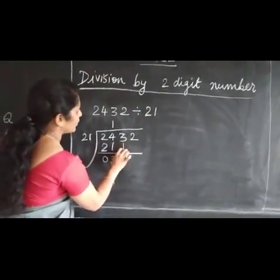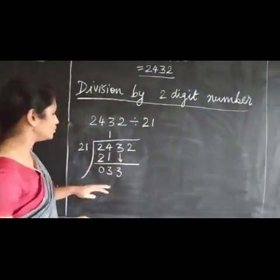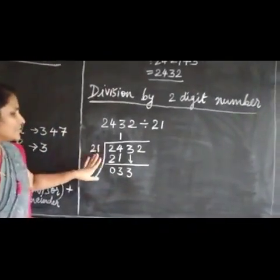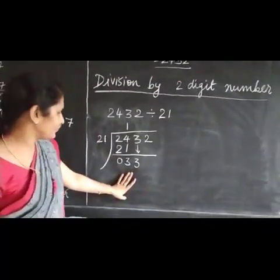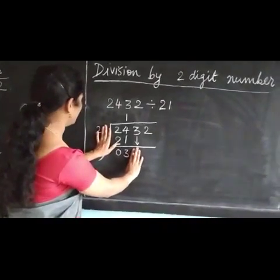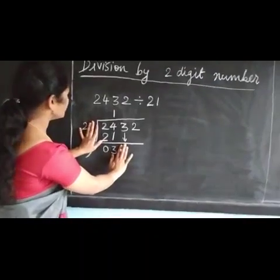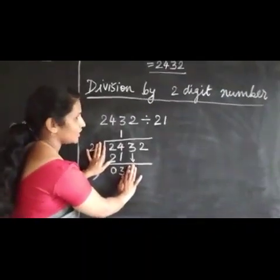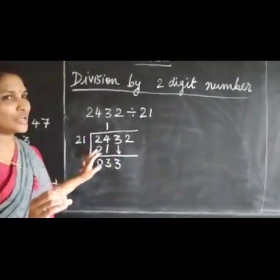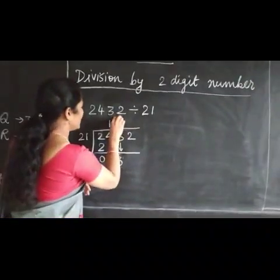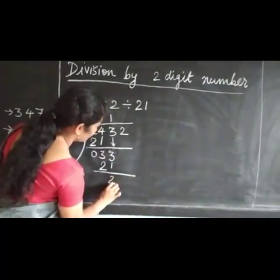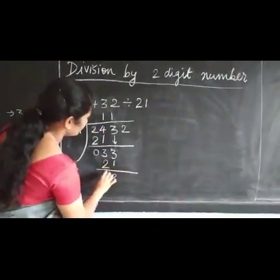Next, bring down 3. Now the number is 33. How many 21s are there in 33? We can guess by looking at the last digits: how many 2s are in 3? 2 ones are 2, so we try 21 once. 3 minus 1 is 2, 3 minus 2 is 1.